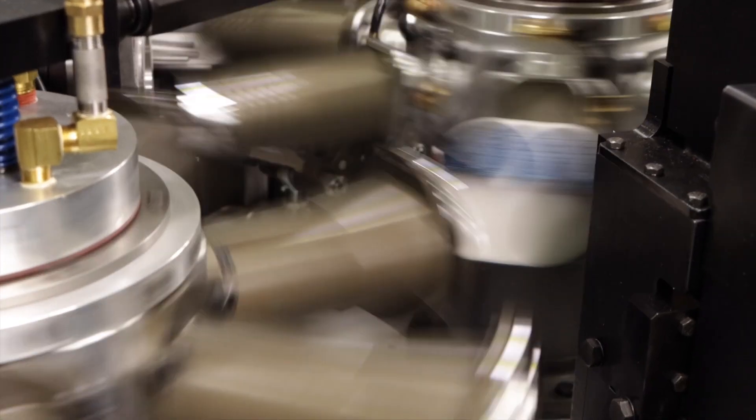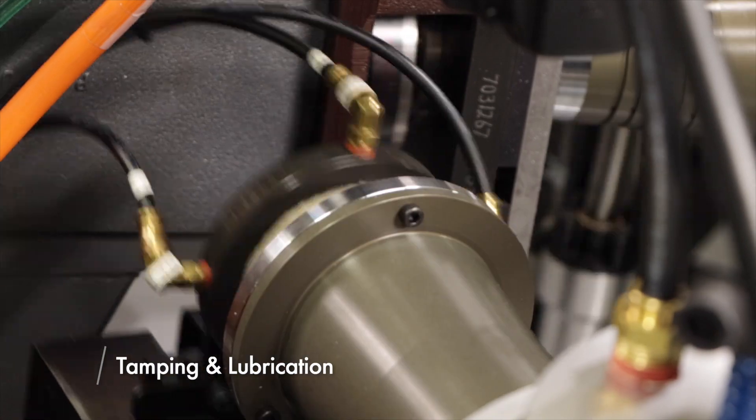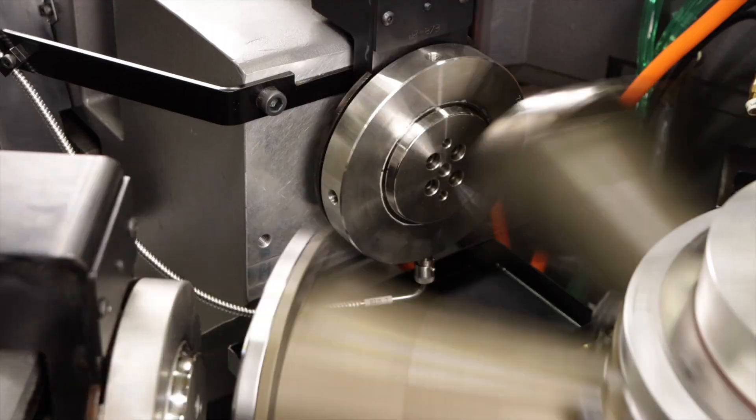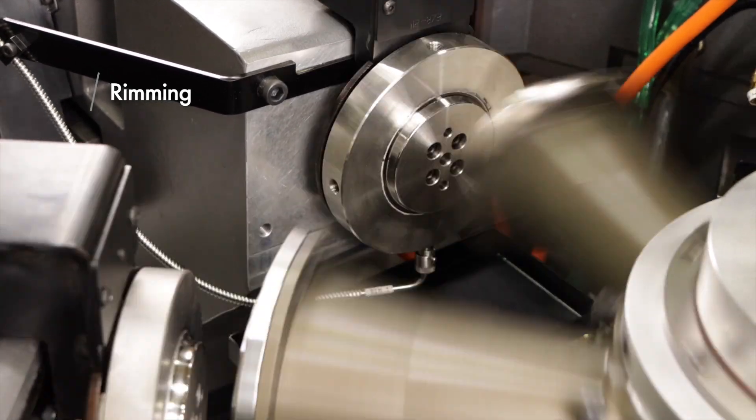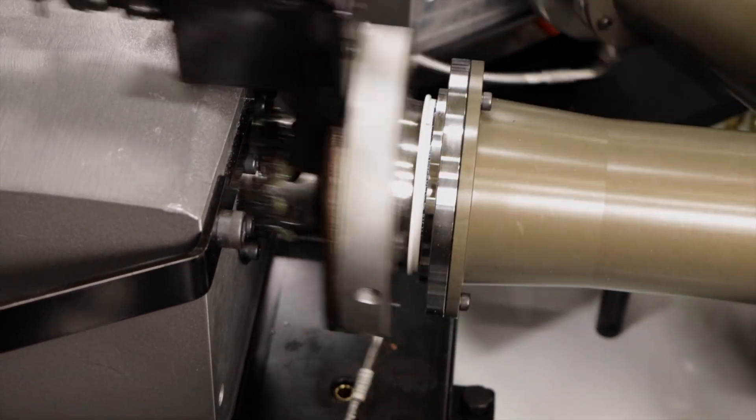Containers are then transferred to pockets on the rimming turret. The tamper lube sets the containers in the pocket, while lubrication is applied to the top edge of the blank to facilitate curling. The first curl station partially curls the top edge. The second curl station finishes the curl to the specifications.